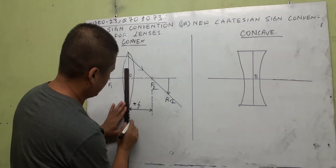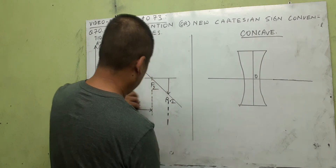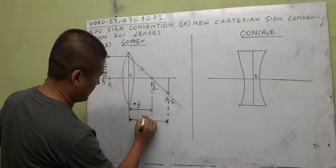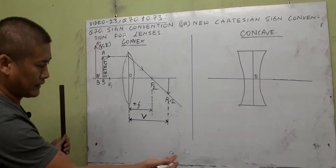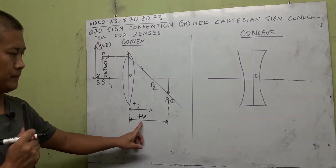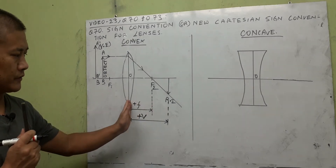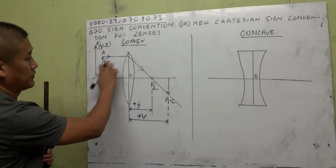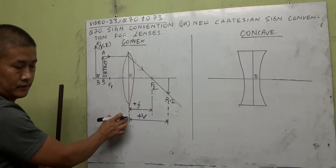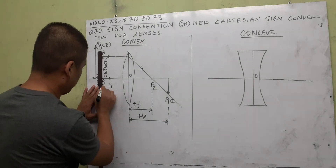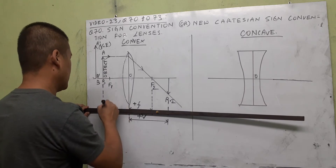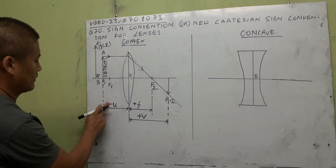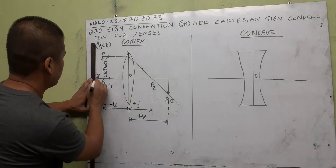The distance between focus f2 and the optical center is the focal length, small f. Since it's measured on the right, the focal length of a convex lens is always positive. The image distance v — the distance between the real inverted image and the optical center — is on the right side, so v is positive. The object distance u — measured from the object to the optical center — is always on the left, so u is minus.